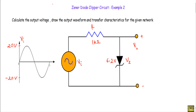This is our given clipper circuit with the applied input voltage Vi, which has a positive maximum of +20V and a negative maximum of -20V. In the circuit we have a series resistor of 1 kilo-ohm. We have a zener diode whose zener breakdown voltage Vz is equal to 6.2V, and for this zener diode we will assume the built-in potential Vk equals 0.8V.